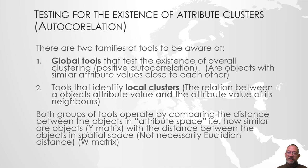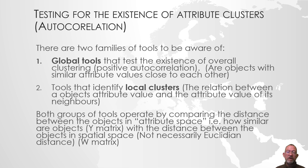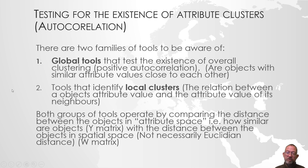For doing this type of testing, there are basically two types of tools we can use. There are global tools that specify whether or not there is a positive autocorrelation and clustering. For one of the tools, it can specify if it's the high or the low values that are clustered. We can use these tools to indicate whether or not there is some form of significant clustering. Then there are local tools that we can use to map the clusters and find out where they are — they look at an object and its neighbors within a specific distance.